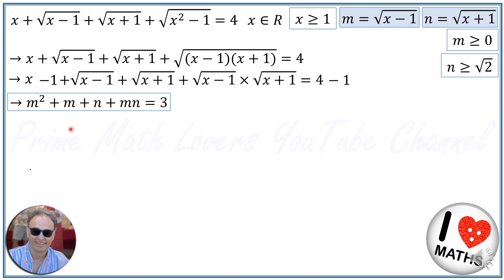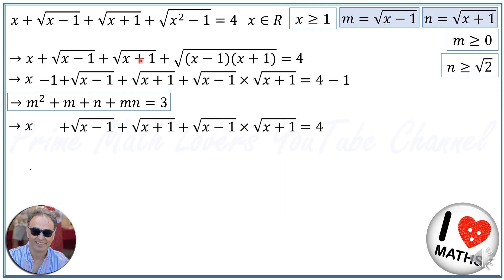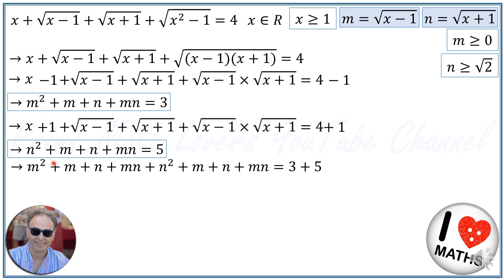We write the equation down again, but this time we add positive 1 to both sides, giving X plus 1 on the left and 4 plus 1 on the right. Since N equals radical X plus 1, X plus 1 equals N squared. So we have N squared plus M plus N plus M times N equal to 5.